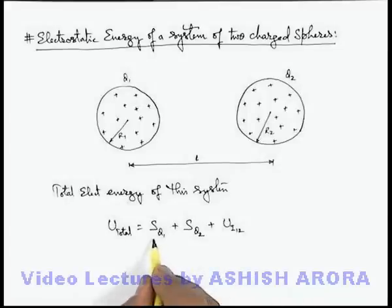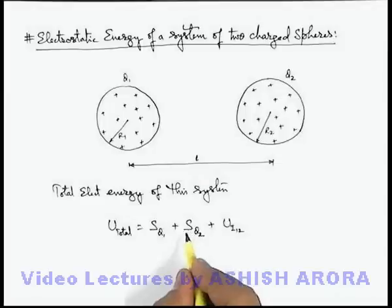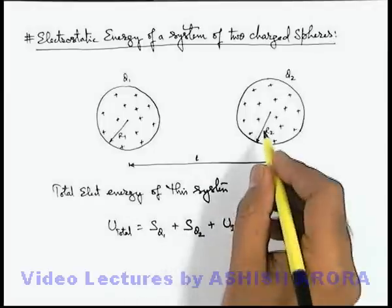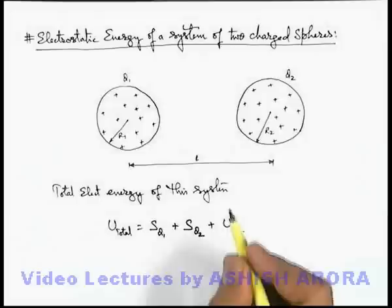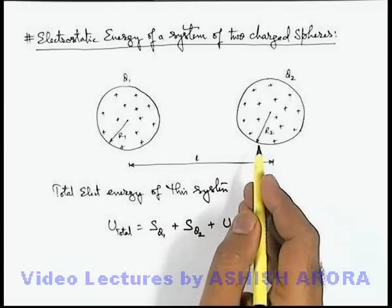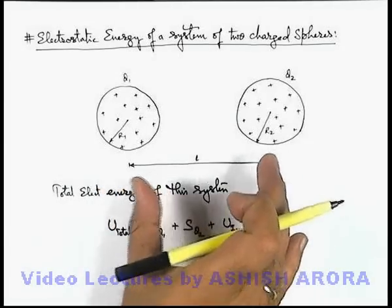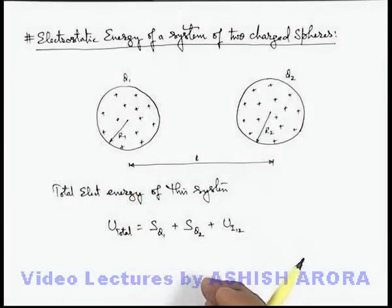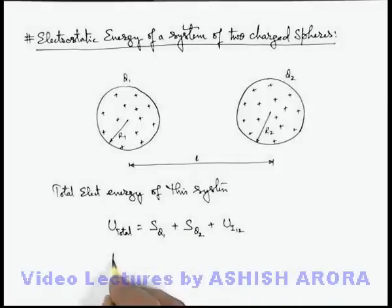Here we can say self energy of q1 is the work done in charging the sphere 1. Self energy of sphere having a charge q2 is work done in charging the sphere 2. And this U_i12, which is the interaction energy between the two spheres, is the work done in bringing these spheres from infinity to the separation l. And all these results we have already studied.